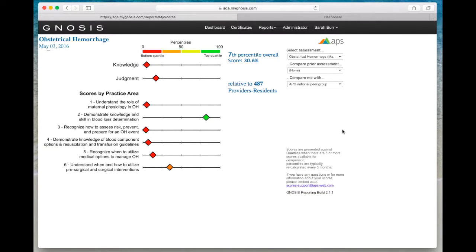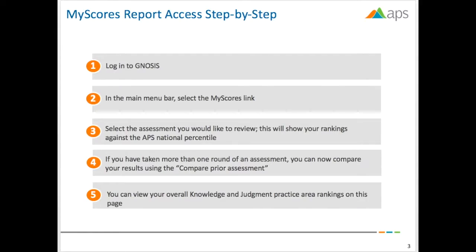Let's review what we've covered. First, you'll need to log into Gnosis. In the main menu bar, select the My Scores link. Select the assessment you would like to review. This will show your rankings against the APS National Percentile.